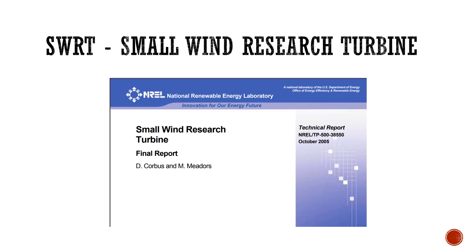Next on the list is the SWRT — the Small Wind Research Turbine. This wind turbine comprises a capacity as low as 10 kW, which is much lower than the 5 MW baseline as well as the AOC. The document seen on the screen is the final technical report, and the link to that document is available in the description.